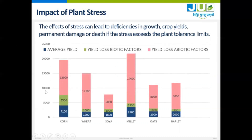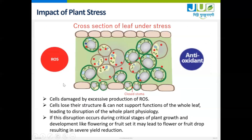You can see here in different crops — corn, wheat, soya, millet, oats, barley — this is the yield we are getting. This is the loss caused by biotic stress, but the major loss is being caused by the abiotic factors.